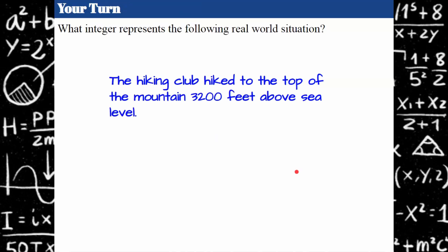Try another one. What integer represents the hiking club hiked to the top of the mountain 3200 feet above sea level? Go ahead and pause. Welcome back — I would just write 3200. If you put feet there that's fine, but just know that you don't need a unit when they're asking you for an integer. If you wrote a positive sign next to it I would take that too, but know that you don't need it.